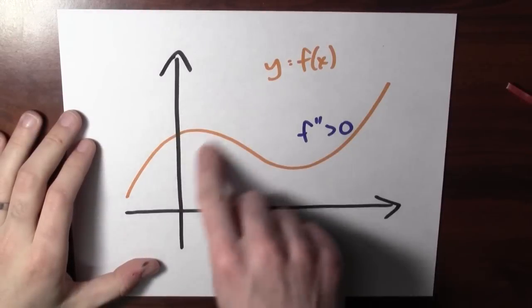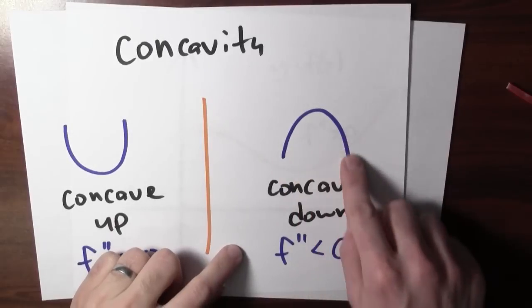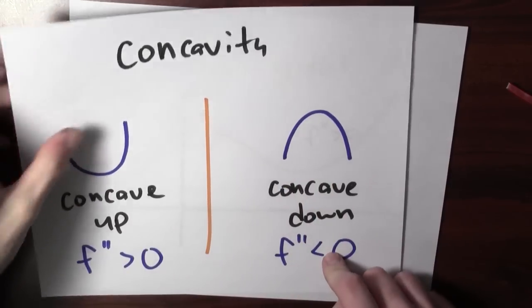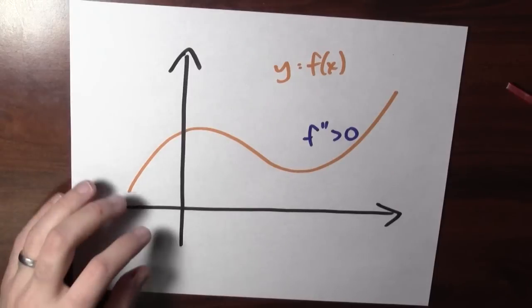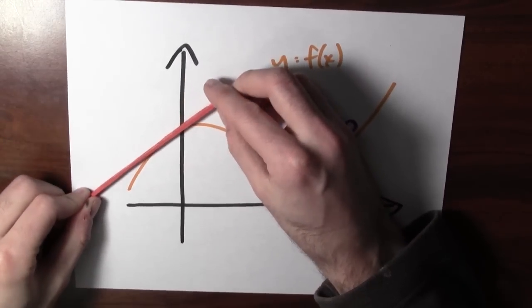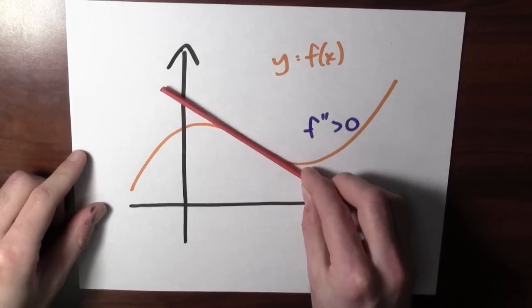You can tell yourself the same story for concave down. So look over here in our sample graph. That part of the graph looks like this concave down picture where the second derivative is negative. Now if the second derivative is negative, that means the derivative is decreasing. And yeah, the slope of the tangent line through this region is going down.